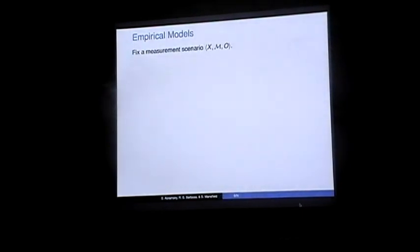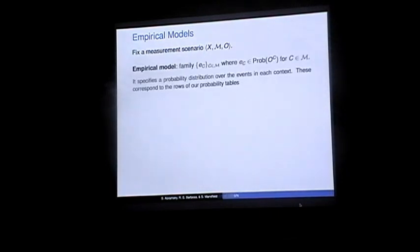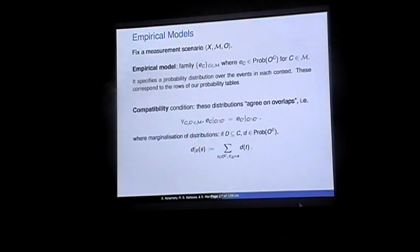So what are empirical models? Given the measurement scenario, which describes the shape of the situation, the empirical model is the actual probability table — basically all the probabilities in that table. An empirical model is a family of probability distributions, one for each context: a probability distribution on the joint assignments of values to the measurements in that context. These are the rows of the probability tables we're talking about.